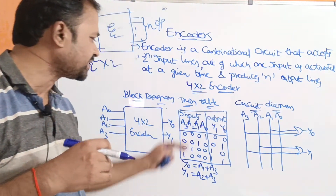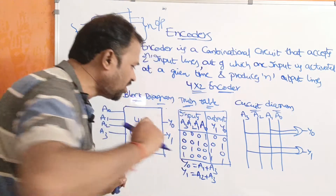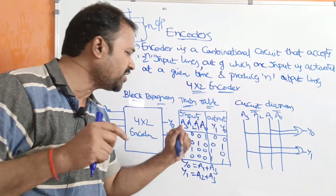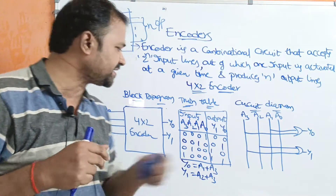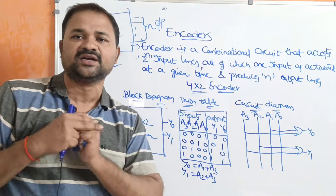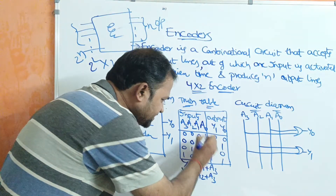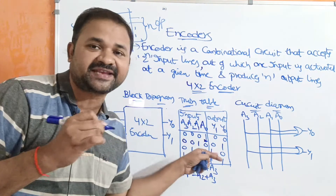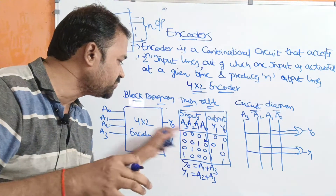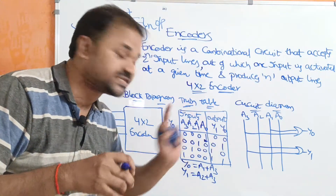Let us see the truth table. The inputs are A3, A2, A1, A0, where A3 is the most significant bit and A0 is the least significant bit. The outputs are Y1 and Y0. If the inputs are 0001, meaning A0 is activated and the remaining 3 inputs are inactive, the output is 00.